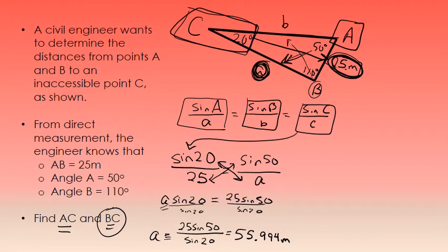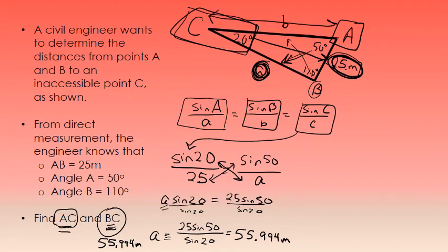In answering this question — find the length of side AC and the length of side BC — side A in my diagram is side BC, and that is 55.994 meters. To find side AC, which in my diagram is labeled as side B, I'll again use the law of sines.